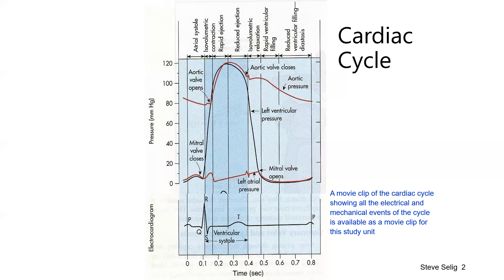Just a couple of general points before we get on to specifics. The electrical events precede the mechanical events because the heart muscle is excitable tissue and requires electrical activation. The second general point is that atrial systole — that is, the contraction of the atria — occurs about 0.1 of a second prior to the beginning of ventricular contraction, and assists with ventricular filling to the extent of about 20%.